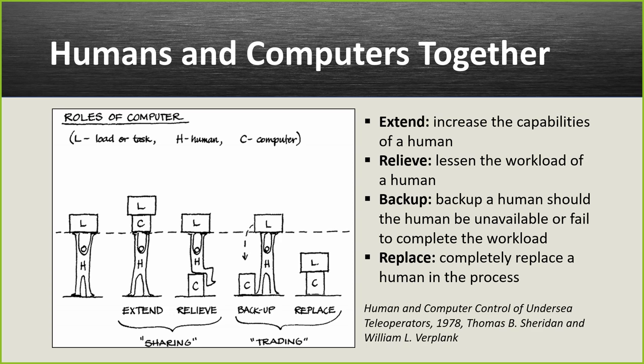Then there's relieving — the computer assists the human by taking on some of the work, lessening the human workload. Both extending and relieving fall under sharing — the computer and human share the workload. In the trading category, the computer does it instead of the human. It could be a backup: if the human doesn't act for some reason, the computer detects that and acts automatically.